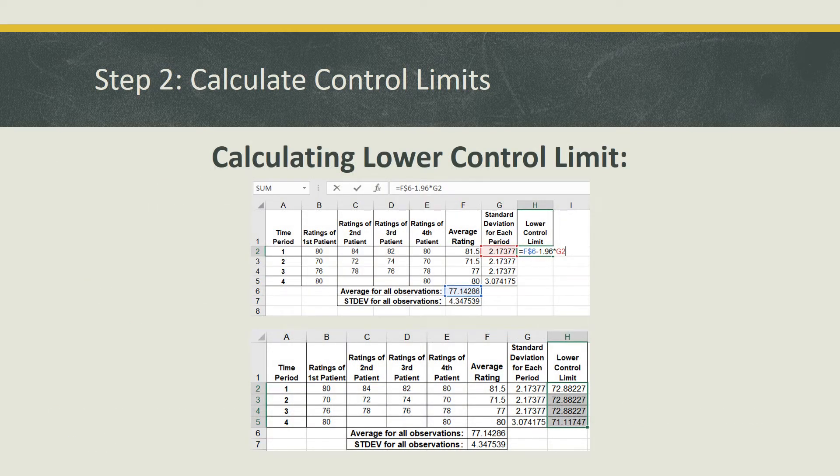Let's go ahead and calculate the lower control limit by using the following formula: Equals F dollar sign six. And again, this ensures that there's a fixed cell for the average for all observations minus, since it's for the lower control limit, 1.96. And this value sets the limit so that 95% of the data falls within the two limits times G2, which is the standard deviation for the first time period. And once you do this, you can go ahead and do it for each row.